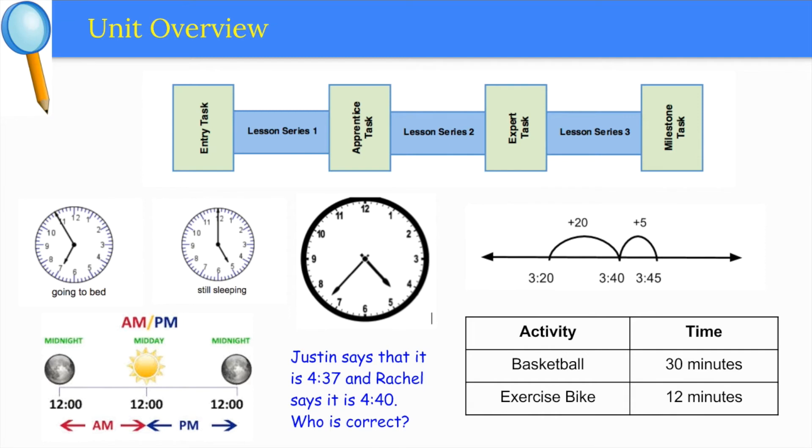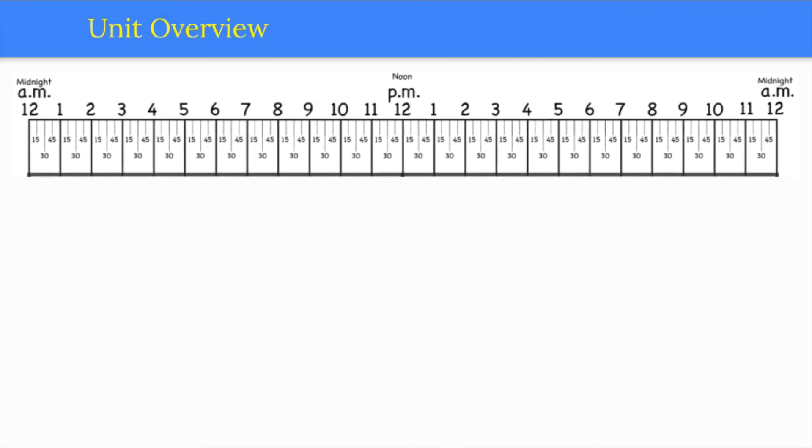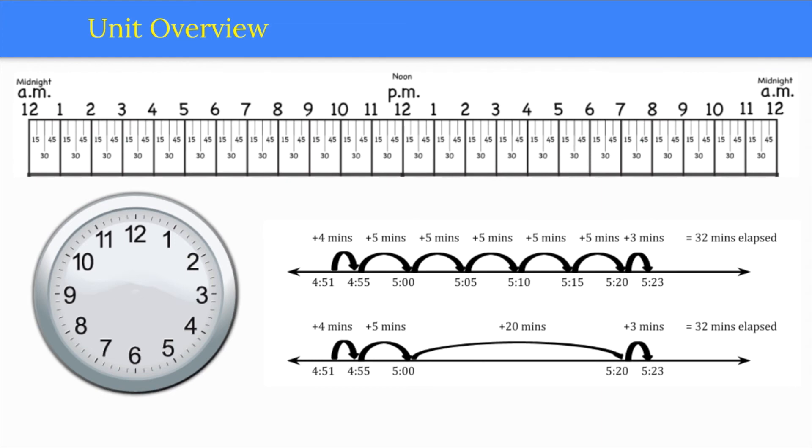The final lesson series expands on this idea with problems that involve elapsed time beyond one hour. One important connection for students to make is between a number line and the clock. Students can think of the analog clock as a round number line. Using number lines to solve problems involving time will help students understand the concept.